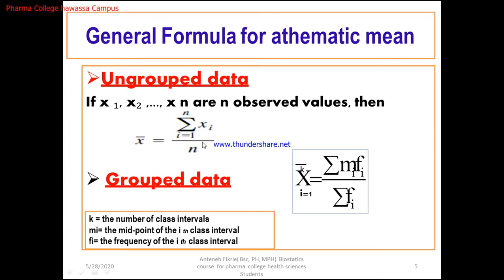Here is the general formula for the calculation of the mean. It is the summation of n observations — observation one, observation two, up to n observations. The summation adds all observations and divides by the total sample size n. This formula can also be used for grouped data. If the data has been grouped into class intervals, we need to calculate the midpoint of each class, multiply by the frequency, and divide by the summation of frequencies. K denotes the class interval, from one up to k class intervals.